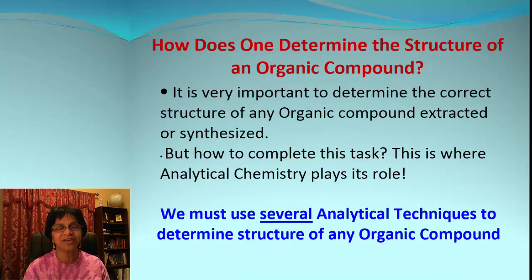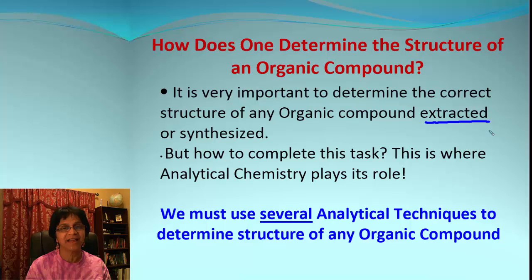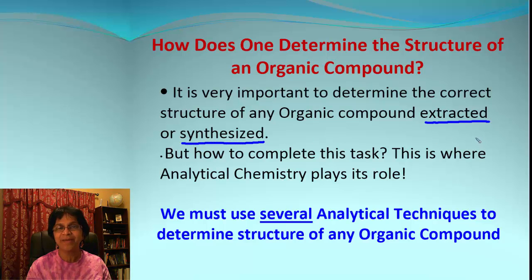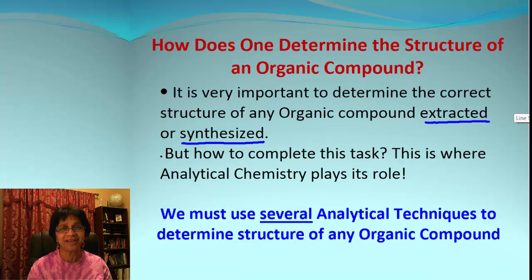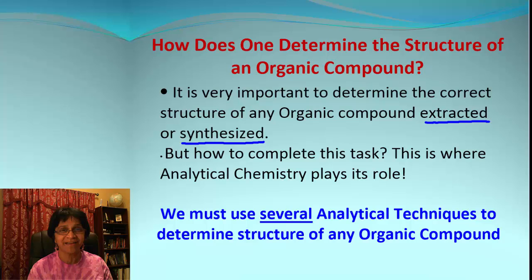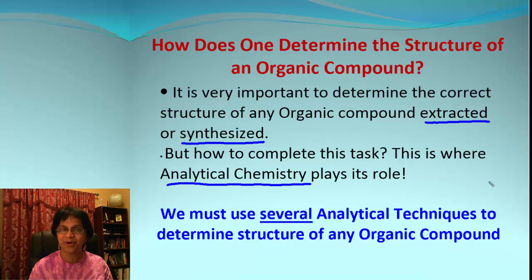We can obtain an organic compound by two different methods: we can either extract it from some natural source like plants or animal tissues, or we can synthesize it in the lab by mixing chemicals and processing reactions. Either way, the compound which you obtain may or may not be the right compound, and it may not be pure. So it is essential for us to decide the correct structure — it is a challenging task, and that's when analytical chemistry plays an important role.